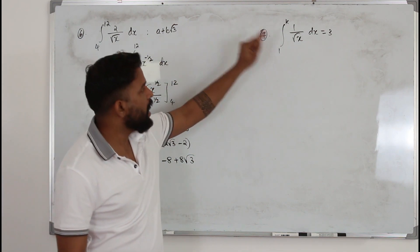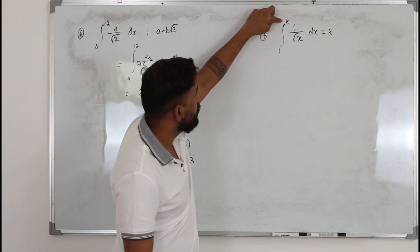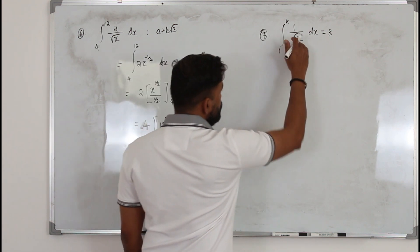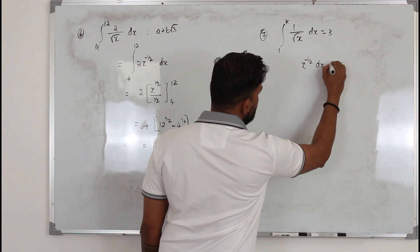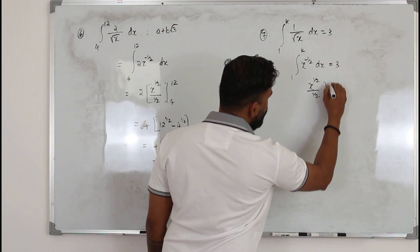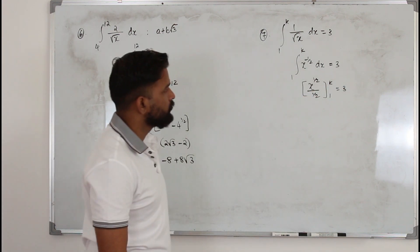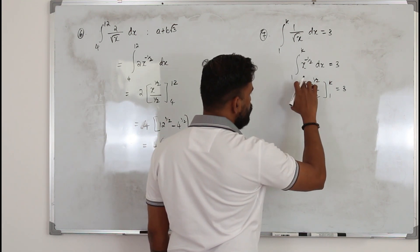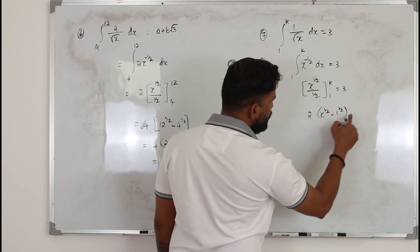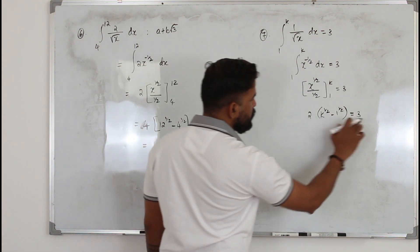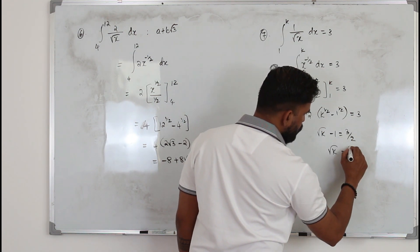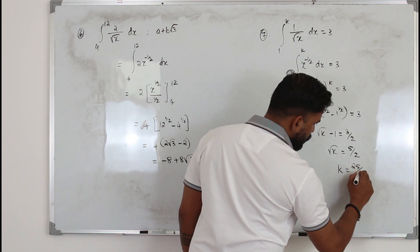In question number 7, the answer is given as 3, but the upper limit is not a number — it's a variable k. You need to find the value of k. Integrate: write this as x power negative half, integral from 1 to k. When you integrate, x power minus half plus 1 becomes positive half over positive half, from 1 to k, equals 3. Substituting: the half becomes 2 over 1, so 2k power half minus 1 power half equals 3. Now make k the subject: square root of k minus 1 equals 3 over 2. So square root of k equals 3 over 2 plus 1, which is 5 over 2. Squaring both sides: k equals 25 over 4.